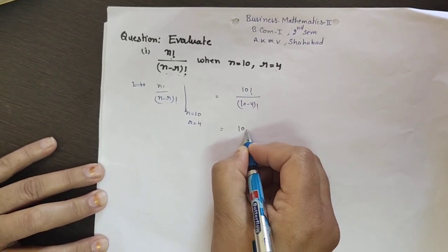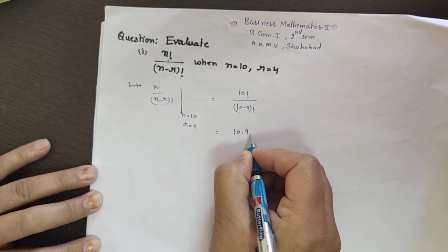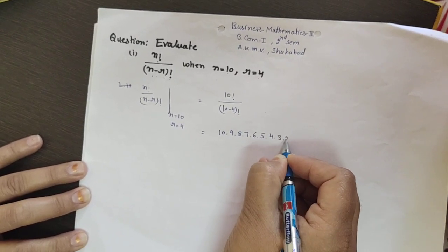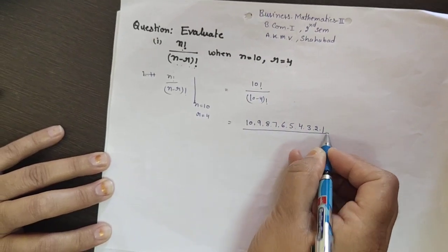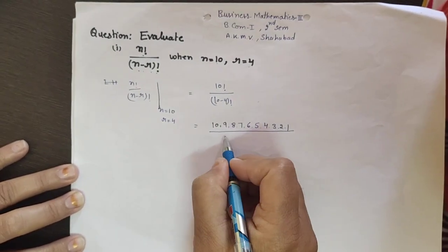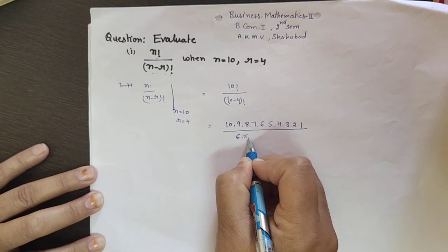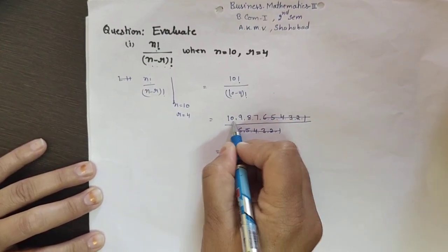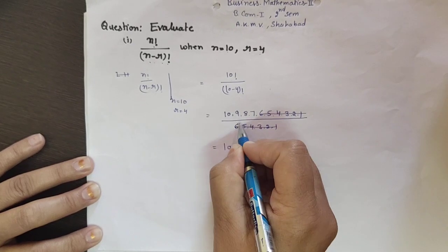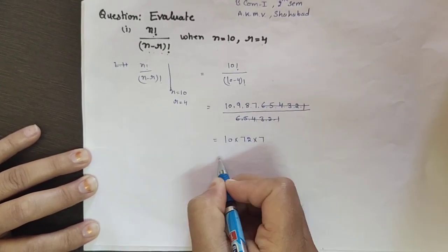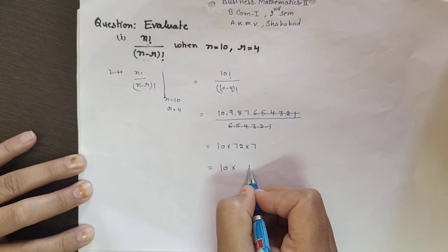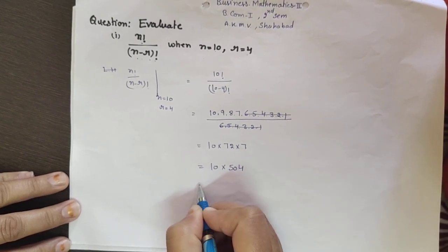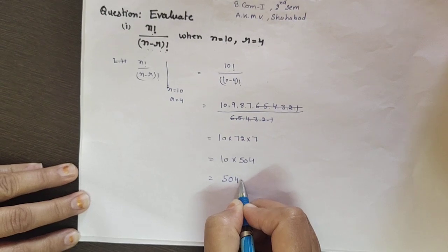We can write 10 factorial as 10 × 9 × 8 × 7 × 6 × 5 × 4 × 3 × 2 × 1. Since 10 − 4 = 6, the denominator is 6 factorial = 6 × 5 × 4 × 3 × 2 × 1. After canceling, we are left with 10 × 9 × 8 × 7, which gives 5040.